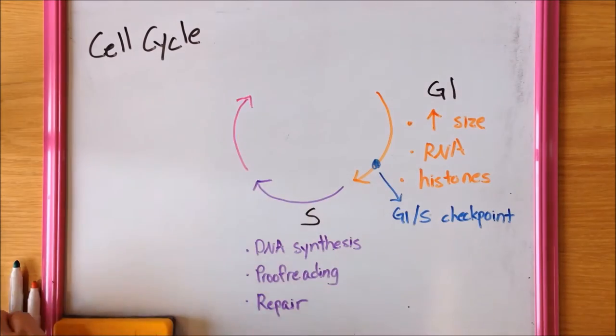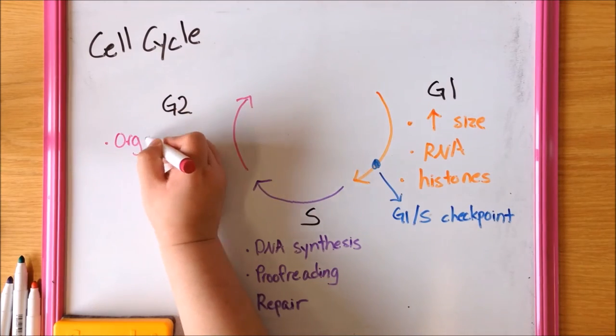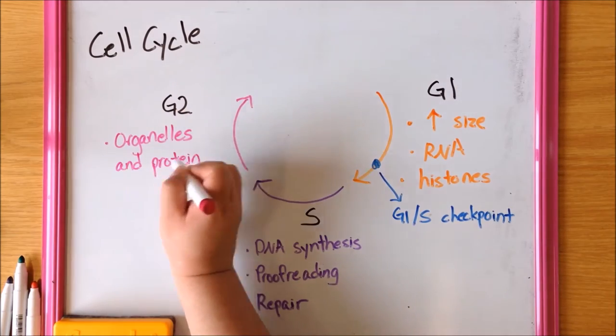Phase 3 is G2. In this phase, there is rapid synthesis of organelles and proteins. This phase contains the G2M checkpoint.